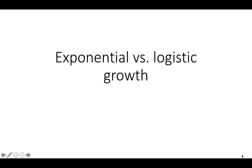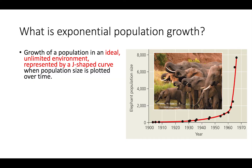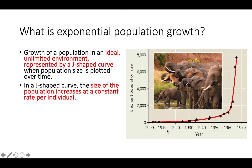This video is going to be about exponential and logistic growth. Exponential population growth is when a population is growing in an ideal, unlimited environment, and it's going to be represented by a J-shaped curve like the one we can see in this diagram right here. That's going to show up when population size is plotted over time. In a J-shaped curve, the size of the population increases at a constant rate per individual.